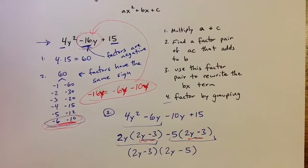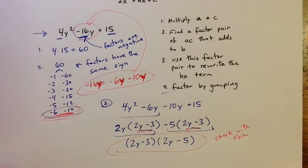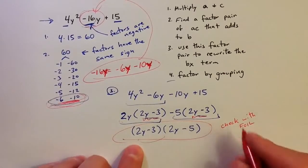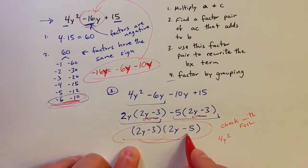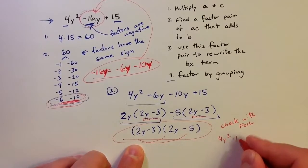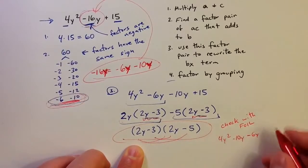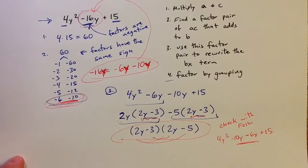We can always check by foiling. It's a good habit to check when you have a way to do that. If we multiply out 2y times 2y is 4y squared. 2y times negative 5 is negative 10y. The inside terms, negative 3 times 2y would be negative 6y. And then negative 3 times negative 5 is positive 15. So those middle terms add up to negative 16, and we found the right factorization.